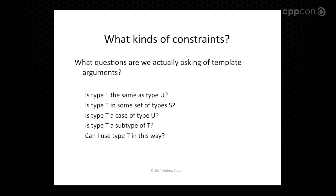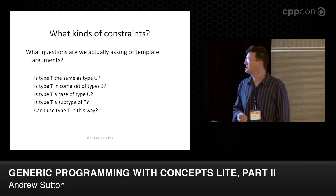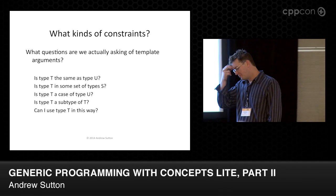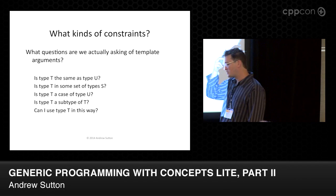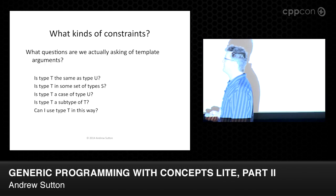What I actually want to talk about are the kinds of constraints we really want to write, because so far we've only written type traits. In my opinion, type traits are fairly uninteresting. But there are a bunch of different questions we can actually ask about these types and these constraints.